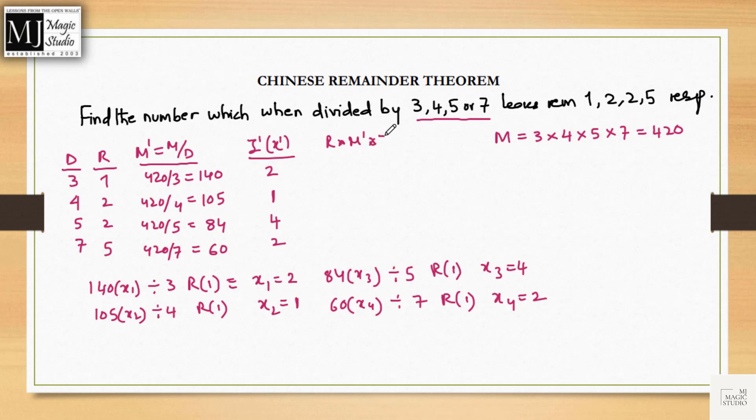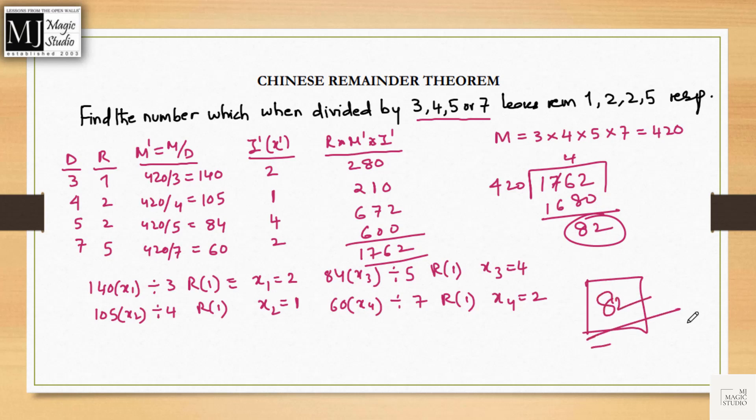Now we need to multiply r into M dash into I dash. 1 into 140, 140 into 2 is 280. 2 into 105, 210 into 1 is 210. 2 into 84, 168 into 4 will be 672. And 5, 300 into 2 is 600. Let's add them up: 1762. So our number we will get if we divide 1762 by M that is 420. It will go 4 times, so we are getting 82 as the remainder. Our required number is 82.